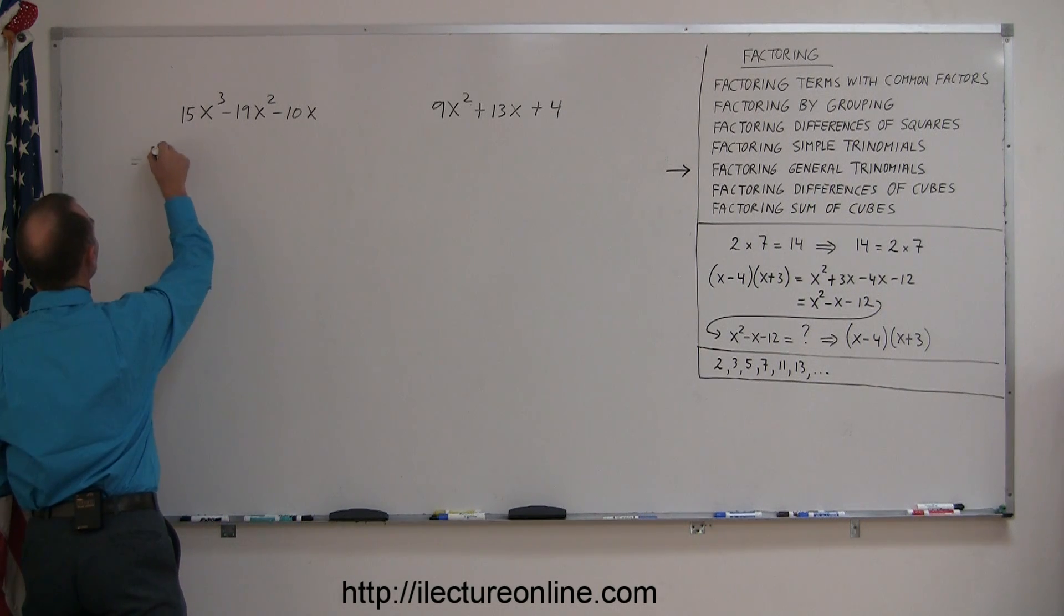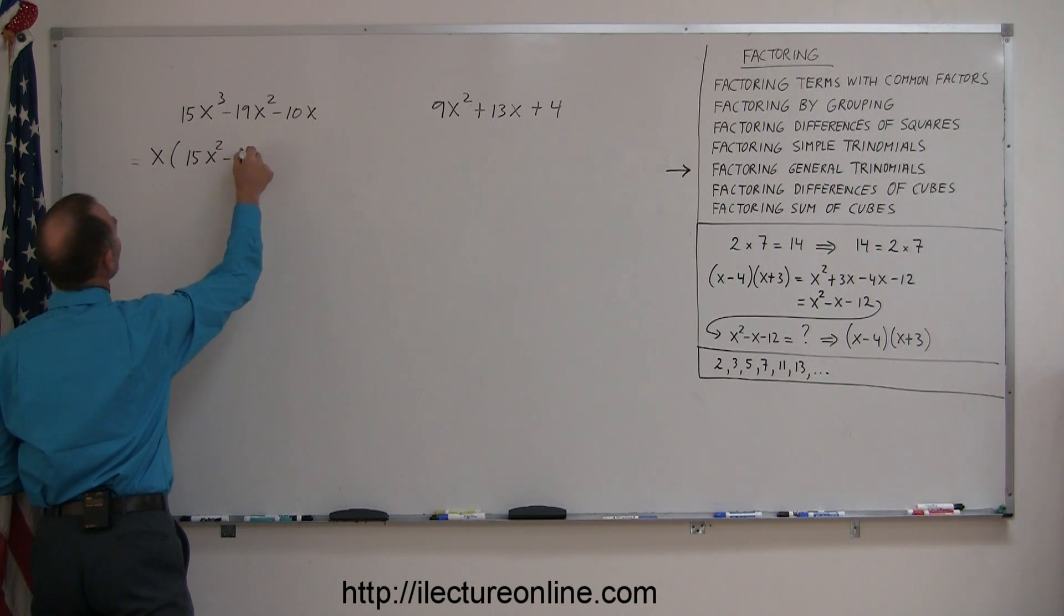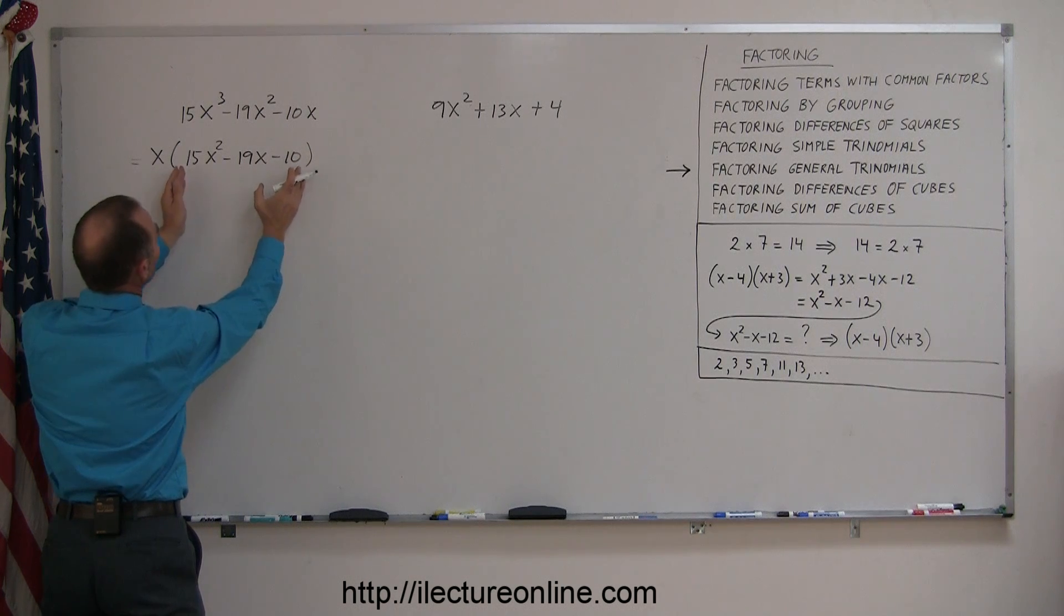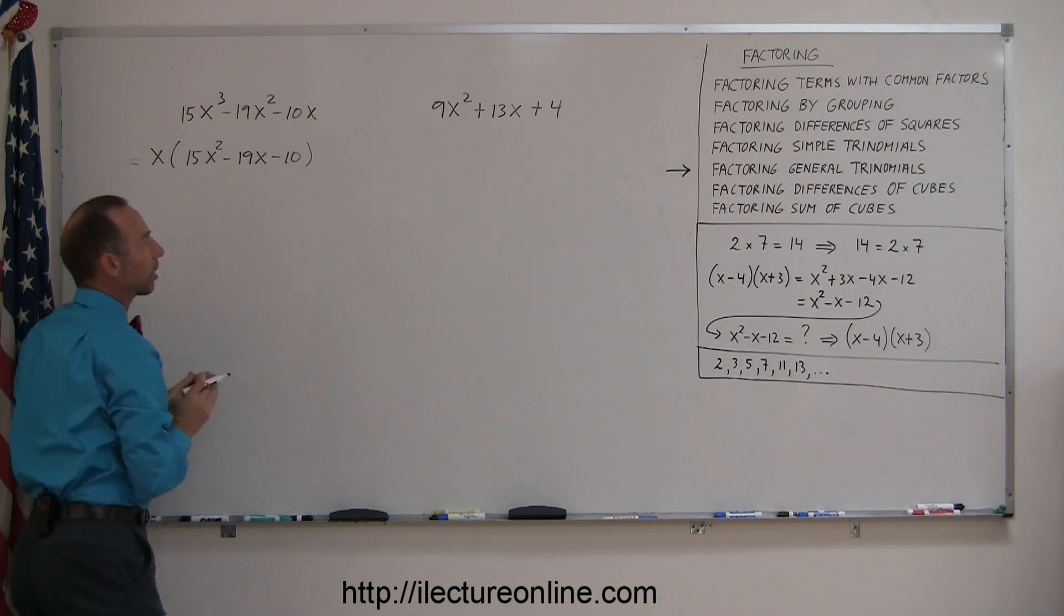So you could say this is equal to x times 15x squared minus 19x minus 10. And now you can go ahead and factor this, and you just keep carrying the x along as you go.